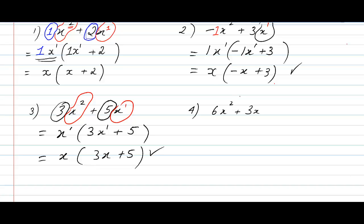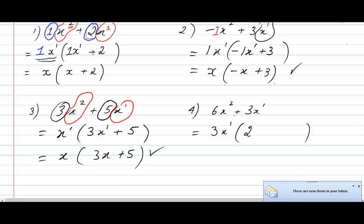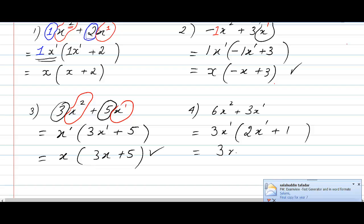Next we have 6x squared plus 3x. Starting with the numbers: what goes into 6 and 3? The largest number is 3. Then looking at x squared and x to the power of 1, the smallest is x to the power of 1. Opening up the bracket: 3 times what gives you 6 is 2, and x to the power of 1 times what gives x to the power of 2 is x to the power of 1. Plus 3 times what equals 3 is 1, and x to the power of 1 times what gives x to the power of 1 — we don't need any more x's. Tidying up: 3x, remove the power of 1, and plus 1 here.